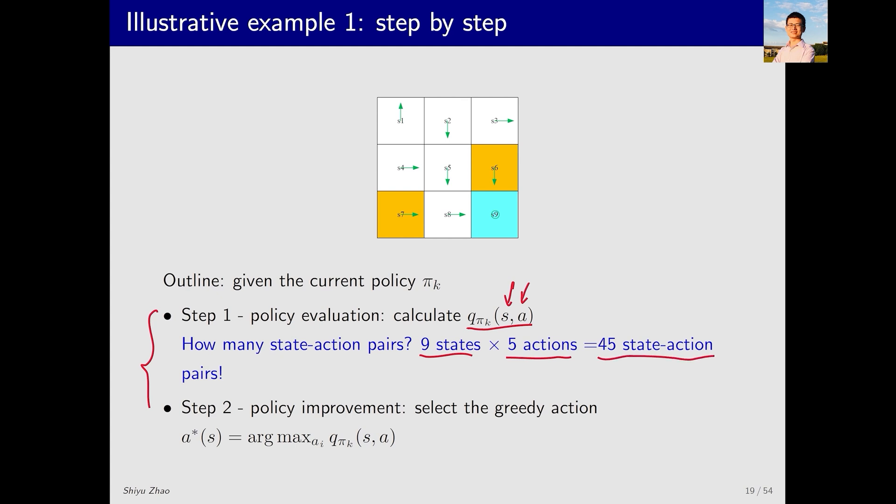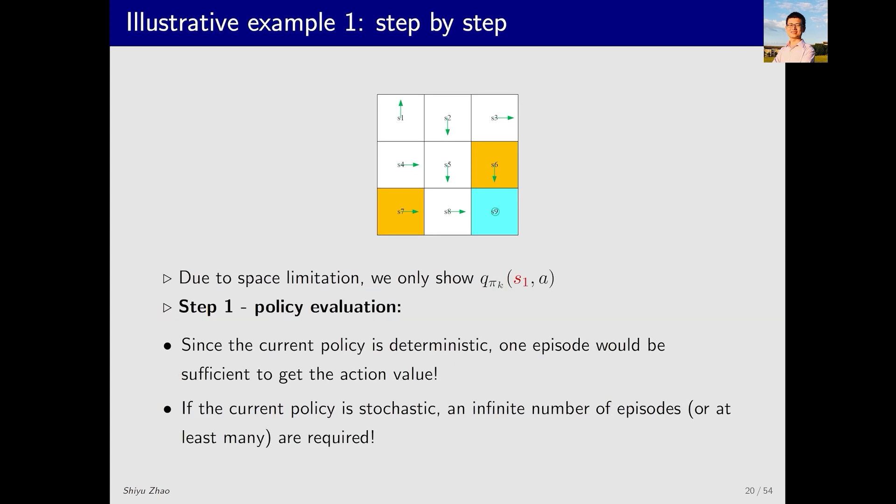So we need to find 45 Qπk values. Assume that we have n trajectories starting from every SA, and then compute the average return of the n trajectories. Therefore, we need a total of 45 times n trajectories. After obtaining Qπk, the next step is policy improvement, where we simply choose the action with the highest action value for each state. Due to time limitations, let's consider just one state, S1, and its five possible actions.